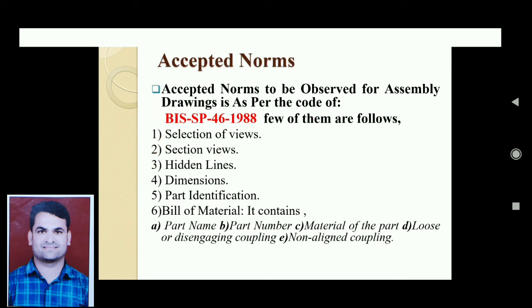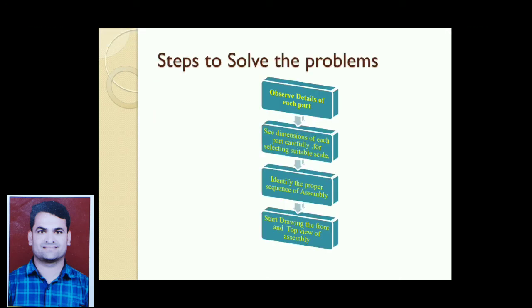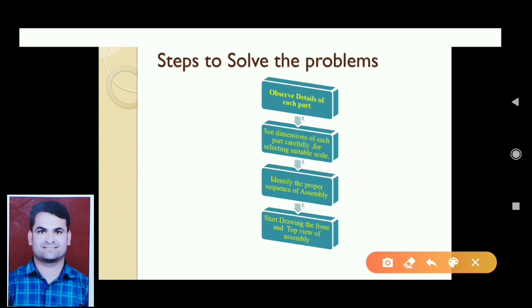These are the accepted norms for assembly drawing. Now, some steps play a very important role in solving problems — especially from the student's point of view in the final exam. Step one: observe the details of each part, as a diagram will be provided and students must examine every part carefully. Step two: check each dimension carefully to select a suitable scale. Step three: identify the proper sequence of assembly. Step four: start the drawing from the front view or top view, as per convenience.